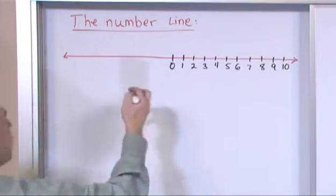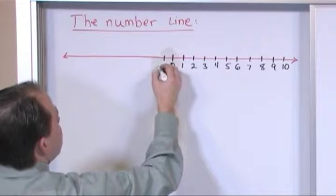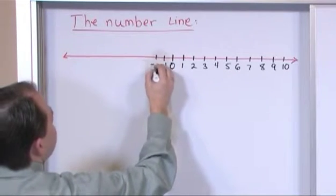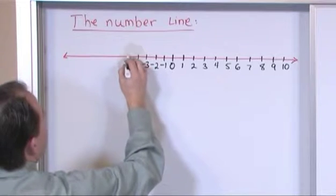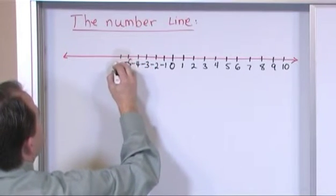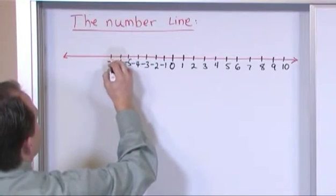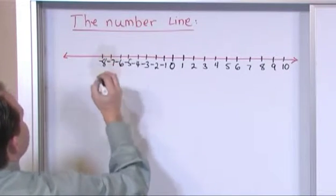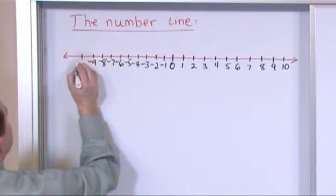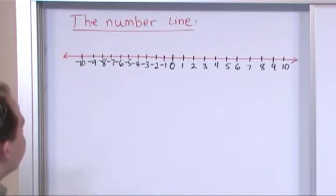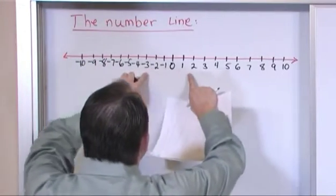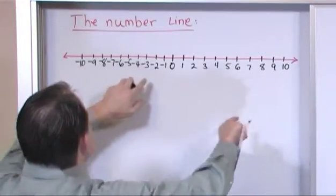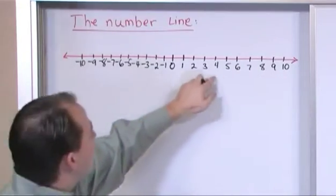And to the left is the negative numbers. Negative one, negative two, negative three, negative four, negative five, negative six, negative seven, negative eight, negative nine, negative ten. So you see zero is sort of like ground zero here in the middle. And then going out both directions, the numbers get larger and larger. It's just that these are negative and these are positive.